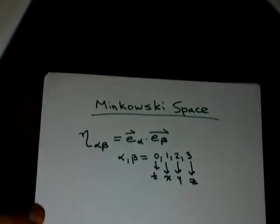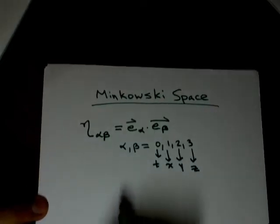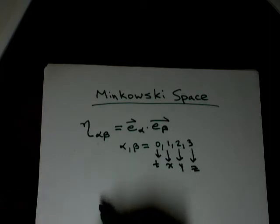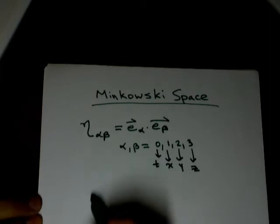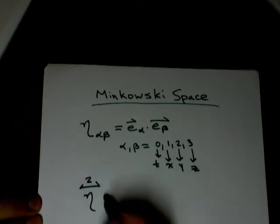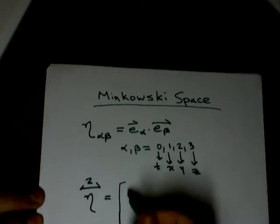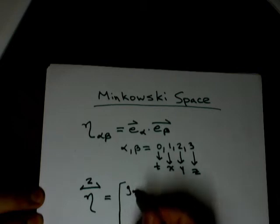And your metric tensor is going to be a second rank tensor. Those components are your g's, actually the eta.